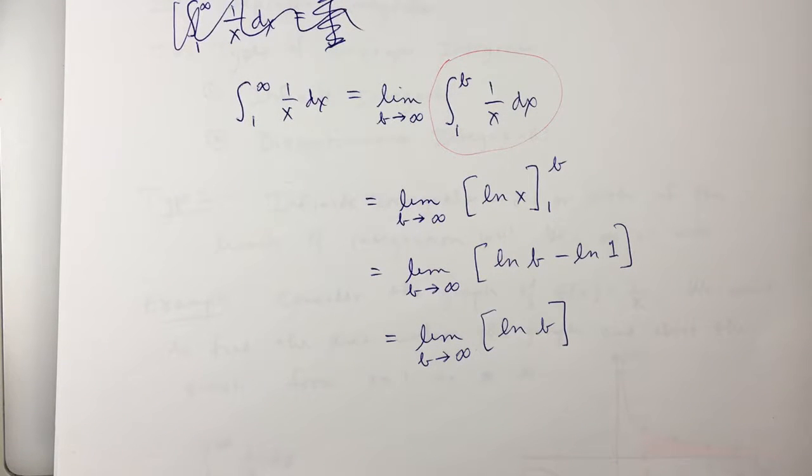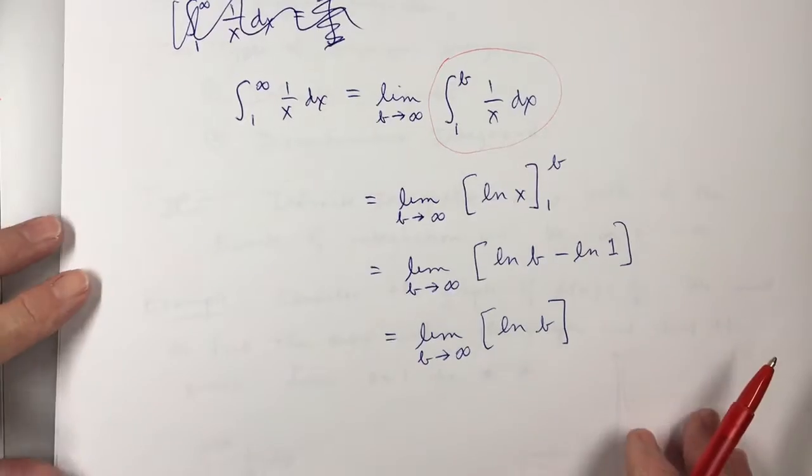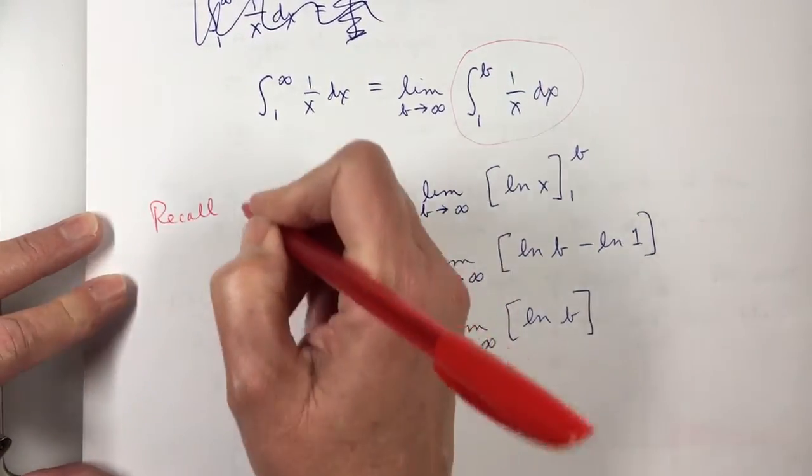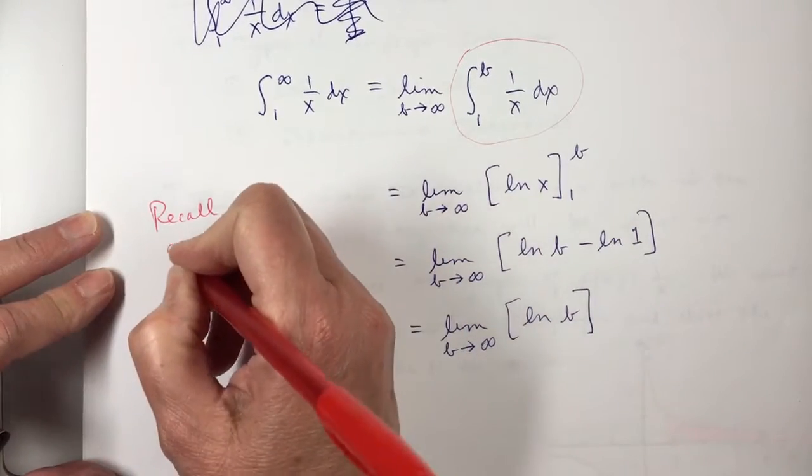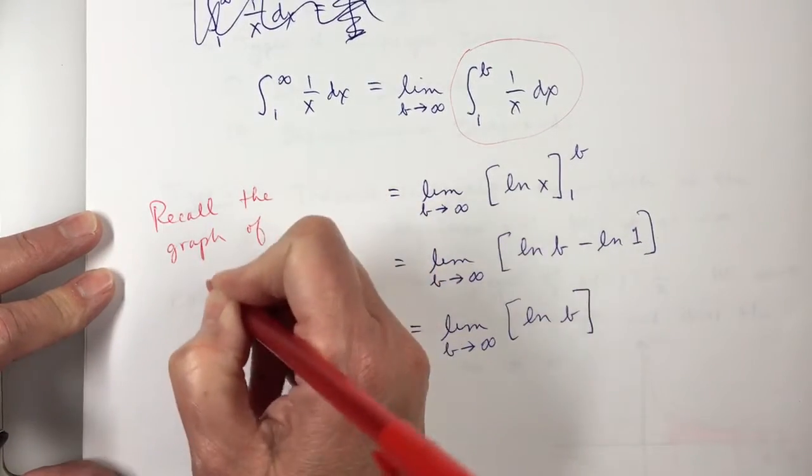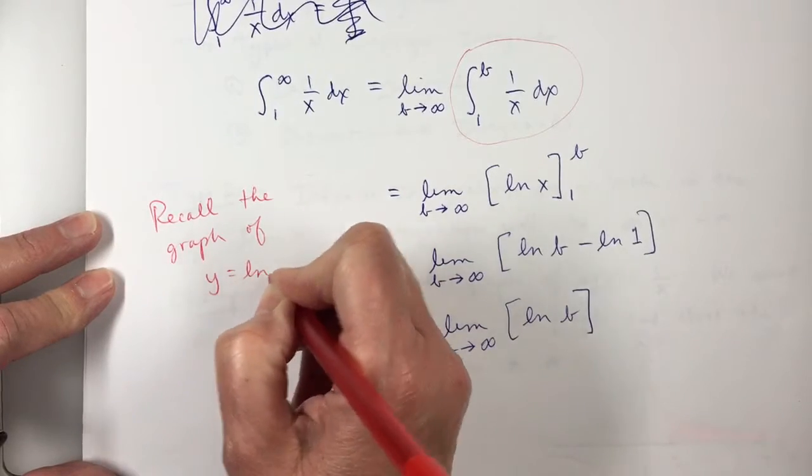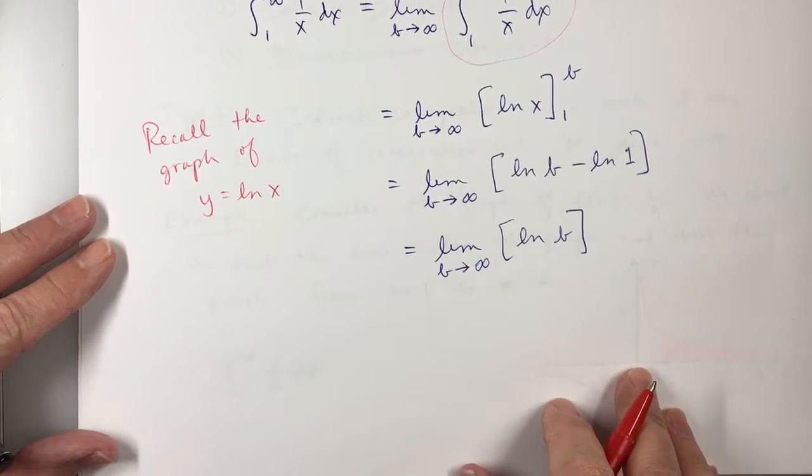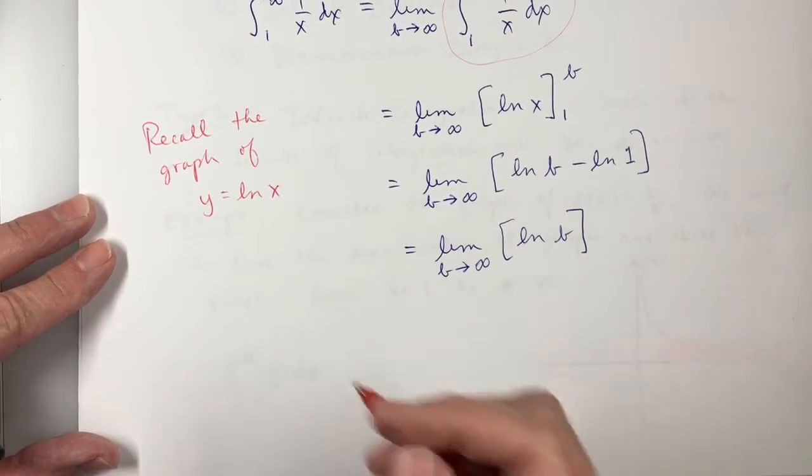And now, you need to figure out what that is. For this, it is helpful to recall what the graph of the natural log of x looks like. I'm going to put this here on the side. Recall the graph of y equals the natural log of x. If you don't remember what that graph looks like, I'm about to remind you.